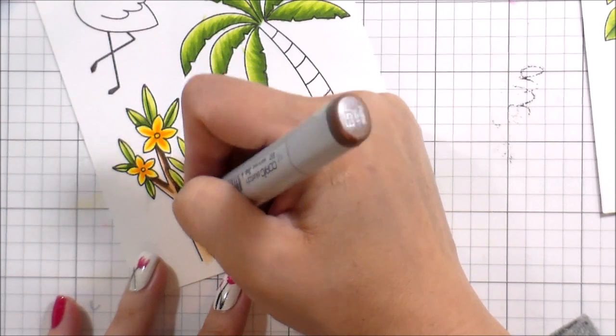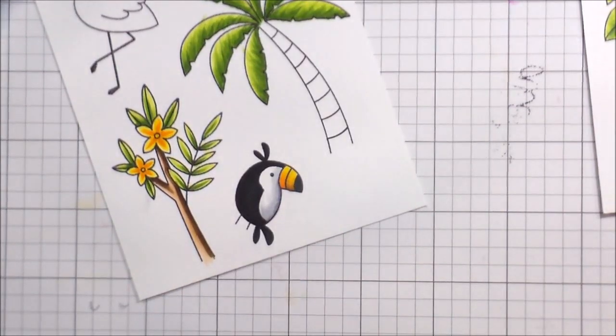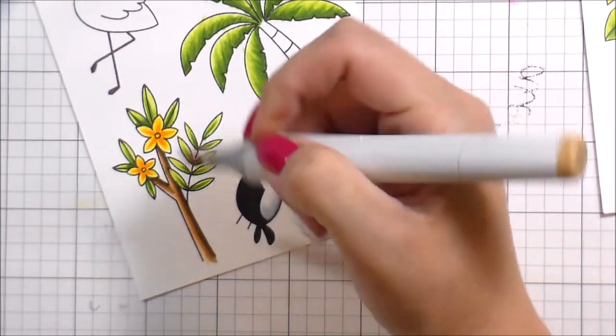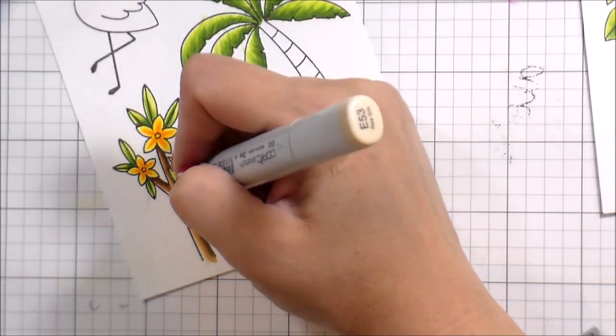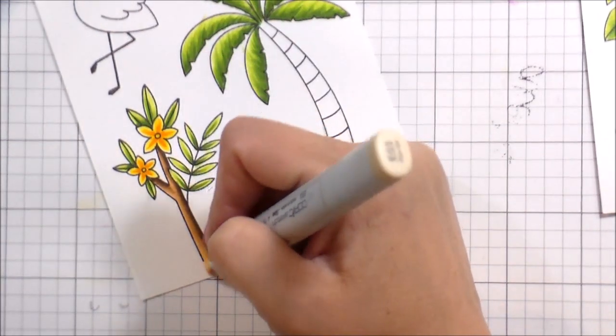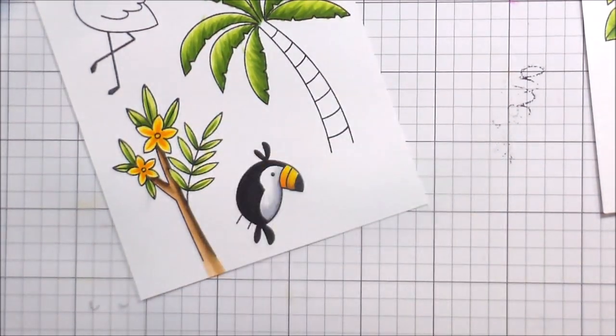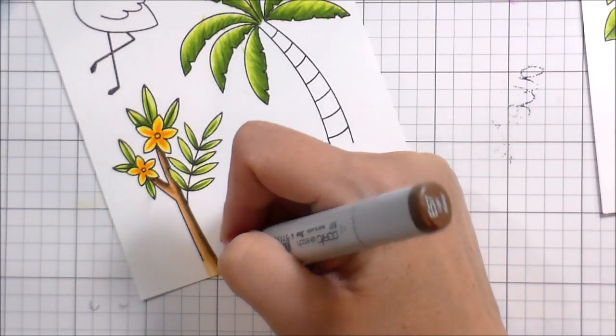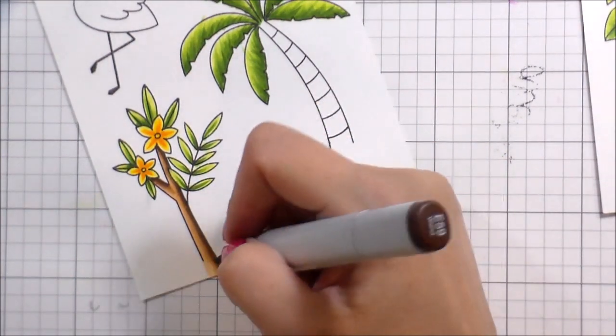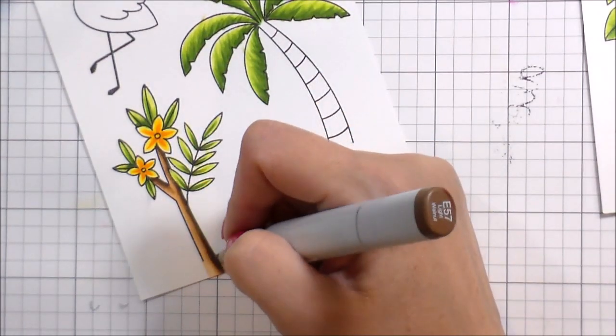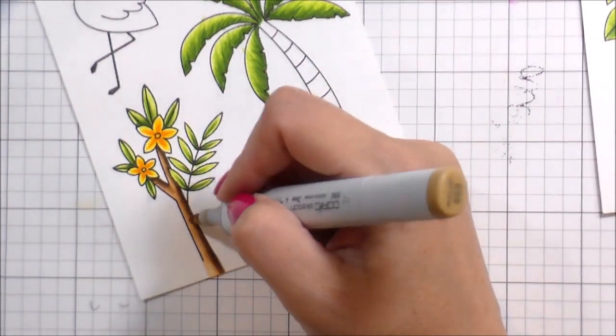I'm social media-ing here on this tree. I decided I wanted to extend the branch so that I would give myself a little bit more room for my little toucan to sit on. He's from the tropical toucan set.